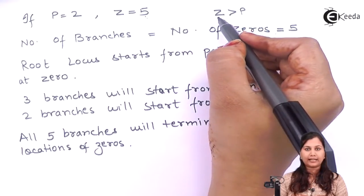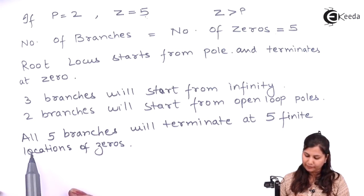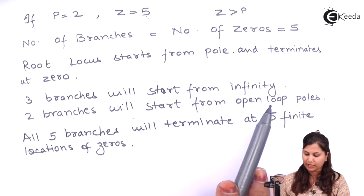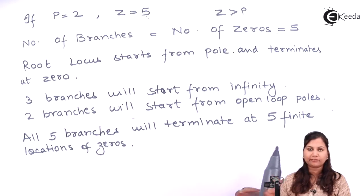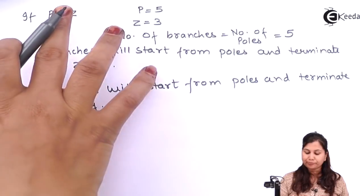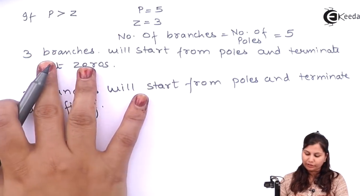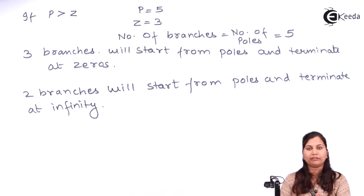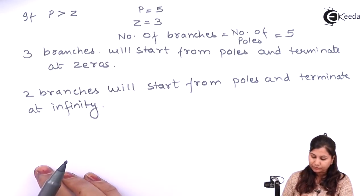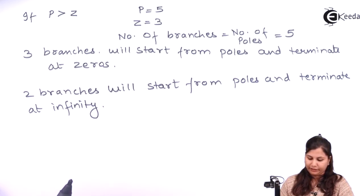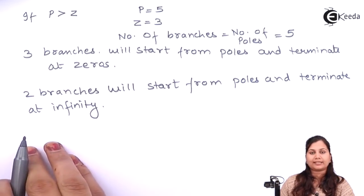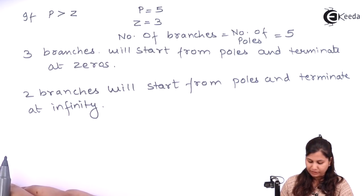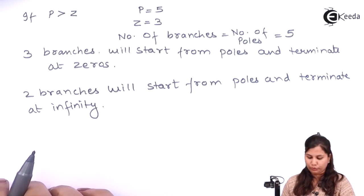In summary for rule 3: if Z is greater than P, some branches start from infinity and all branches terminate at the zeros. If P is greater than Z, some branches start from poles and terminate at zeros, and the remaining branches start from poles and terminate at infinity. This step determines the number of branches of the root locus.